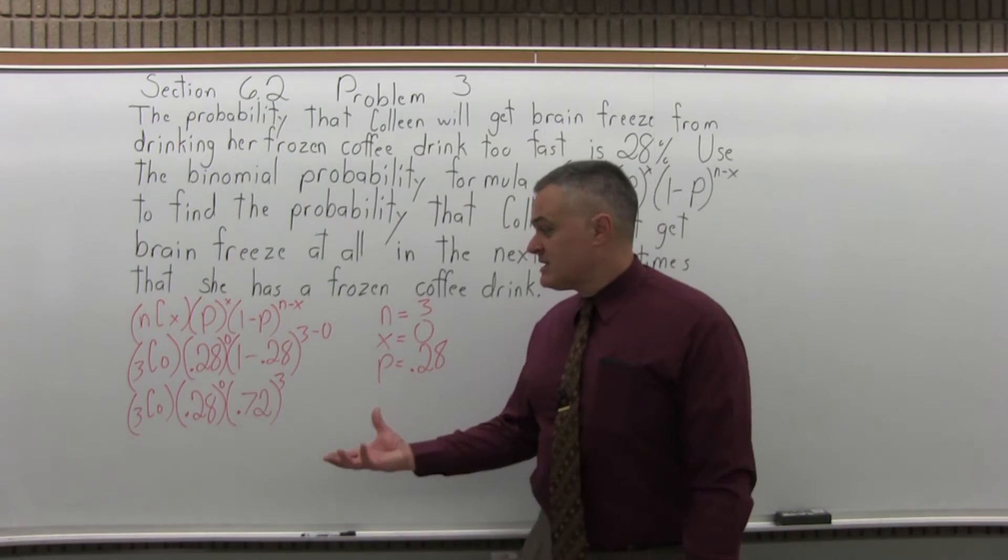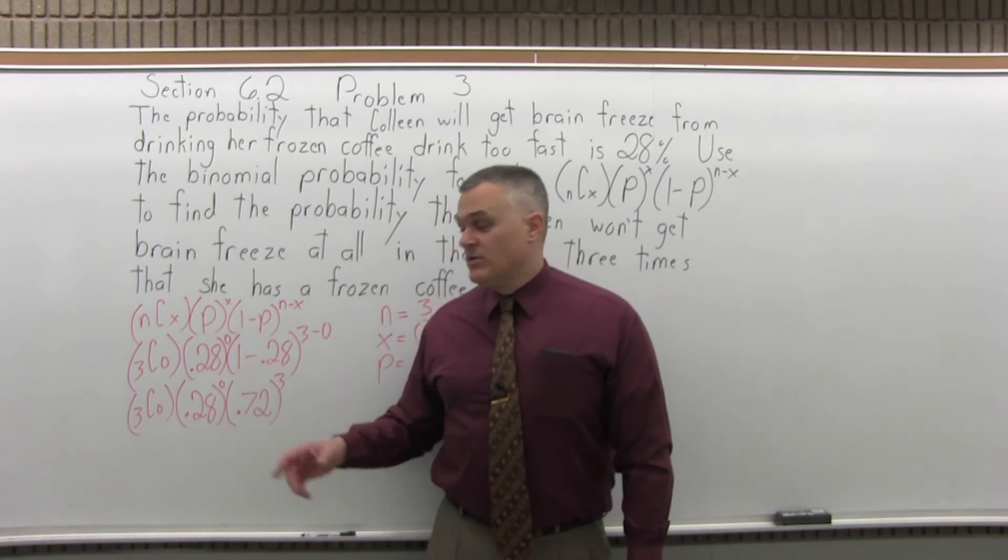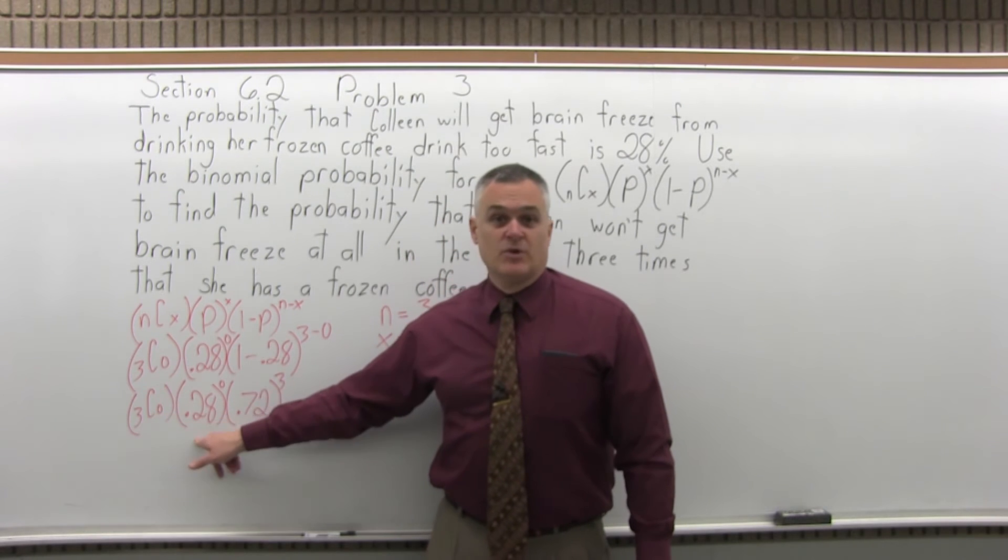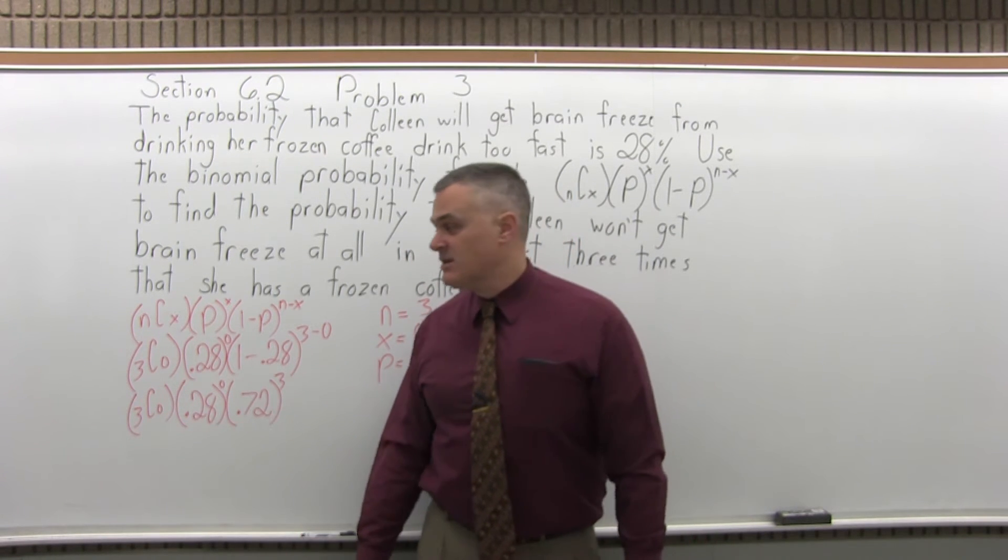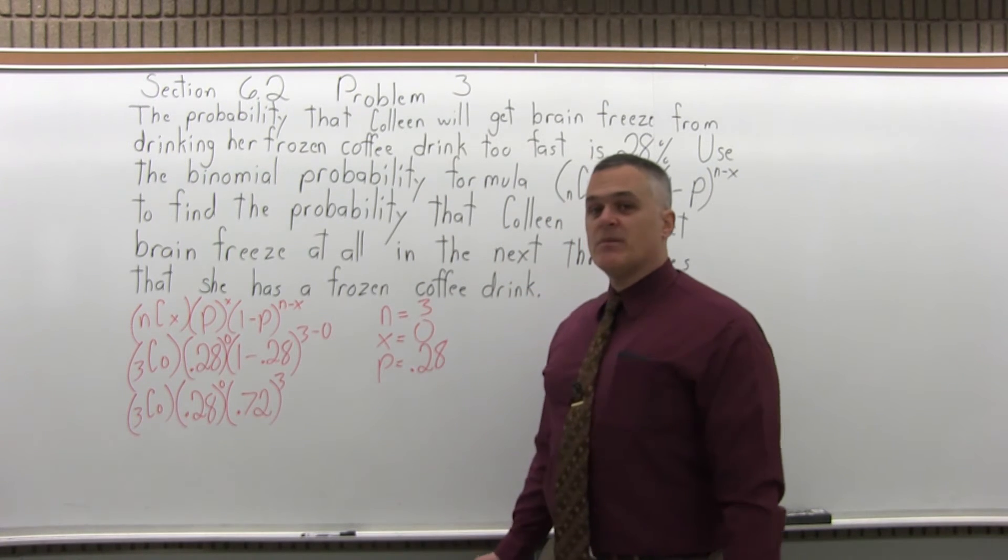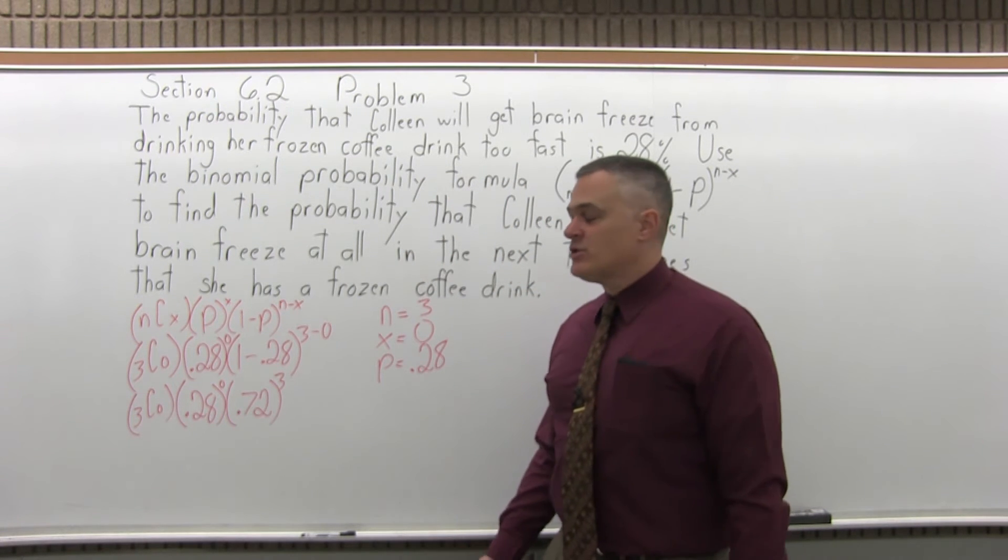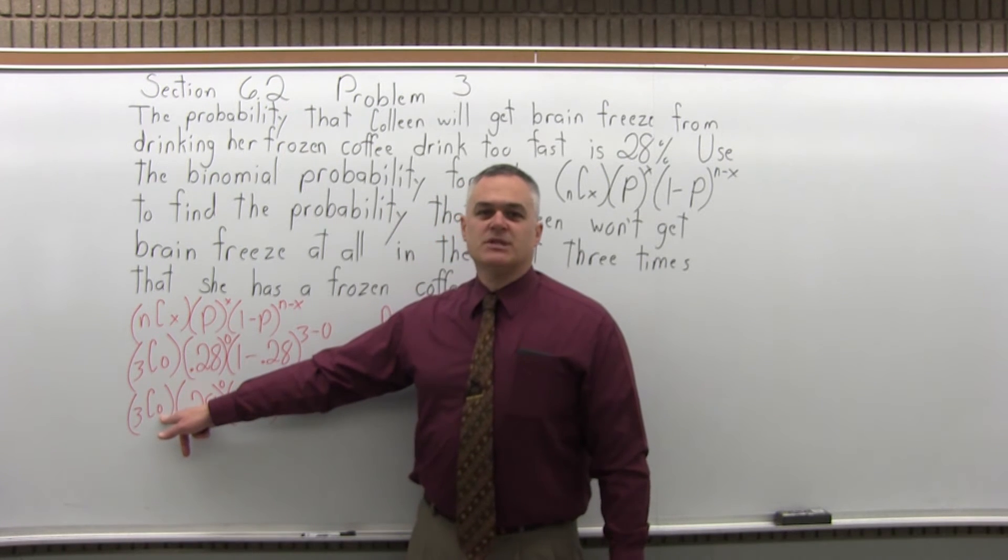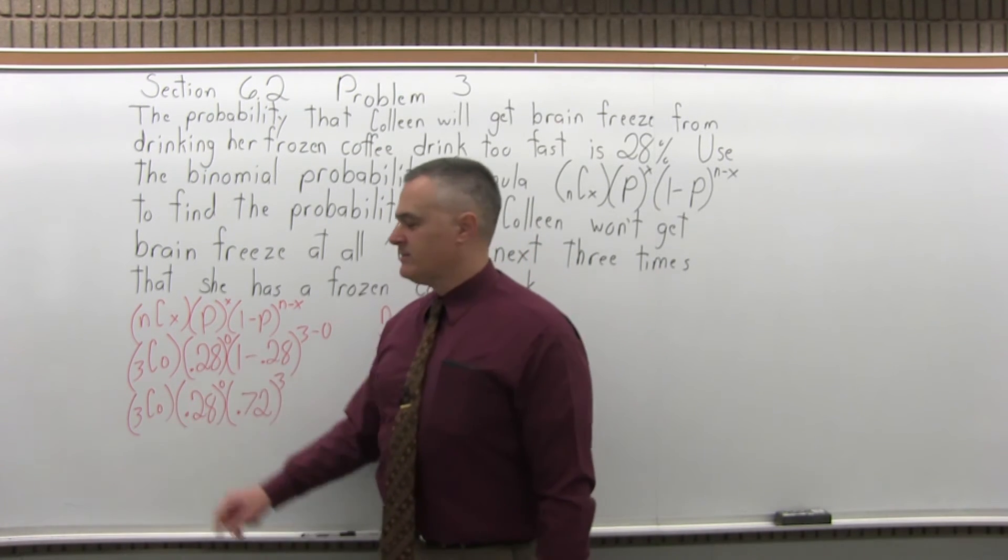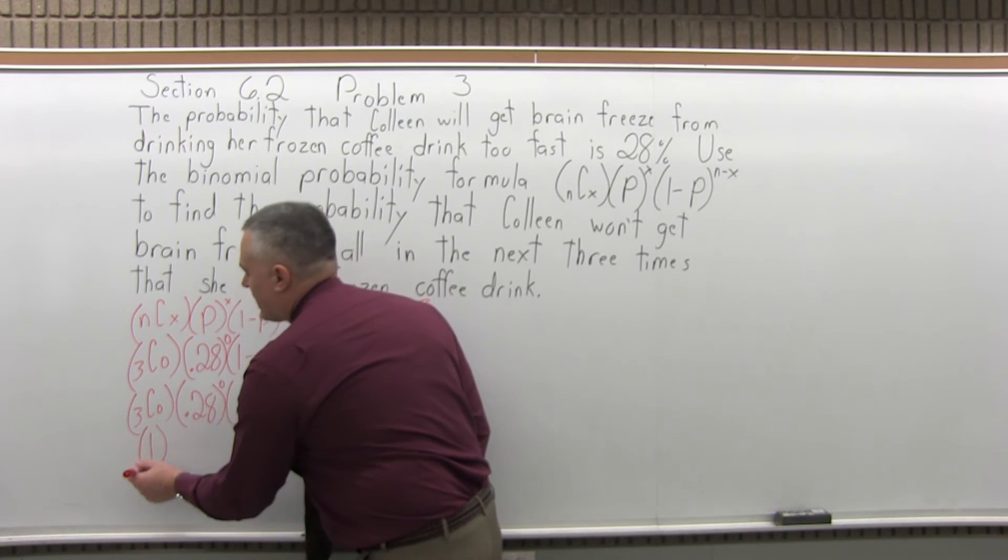So now I have three sets of parentheses. What I'm going to do is find a number answer for each set of parentheses. I'll have three answers, and I multiply those three answers together. So now, 3 combination zero, if you remember one of the shortcuts from combinations, any time the second number is zero, the answer is 1.